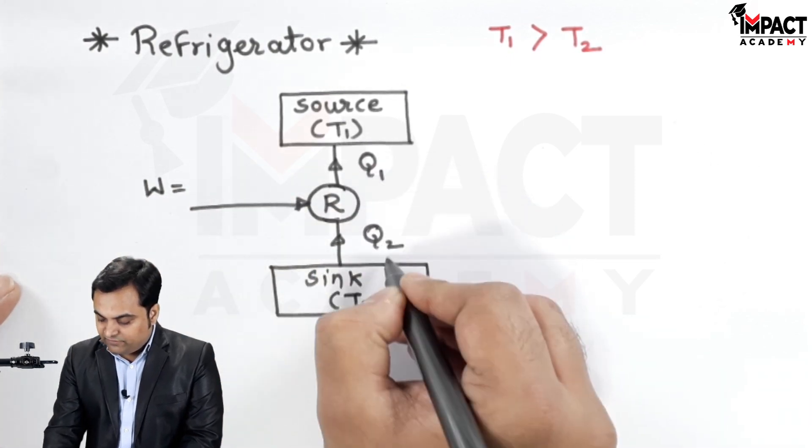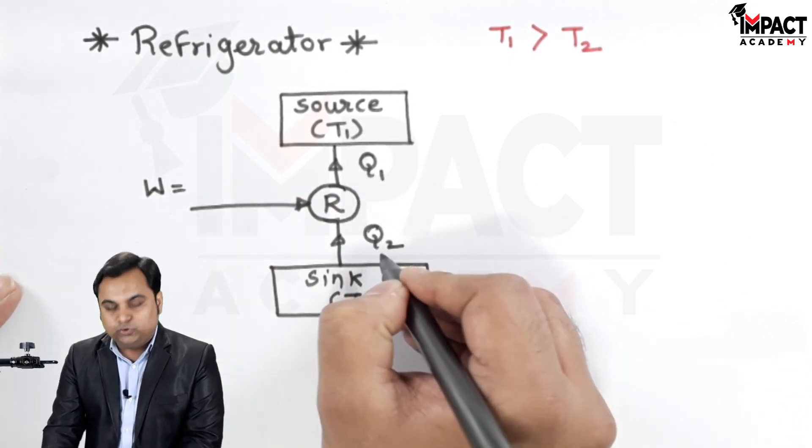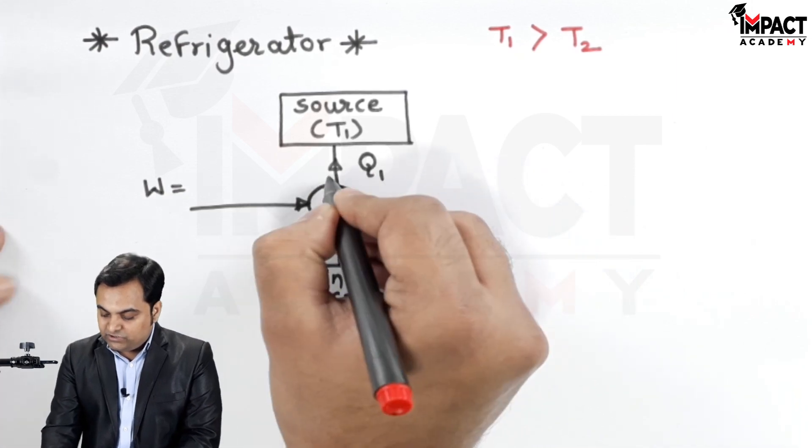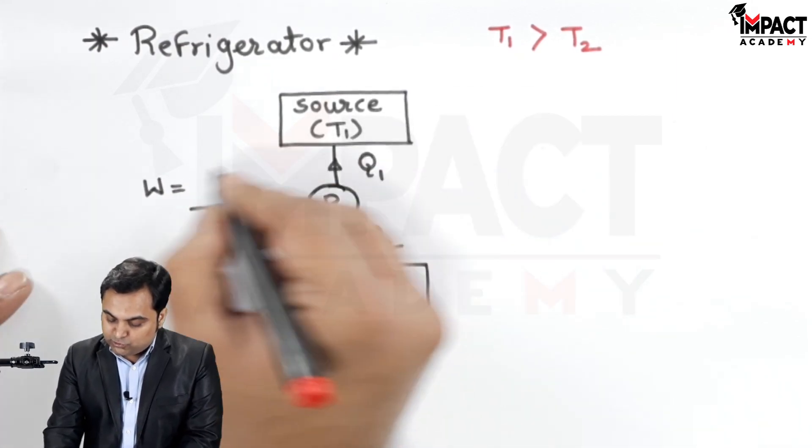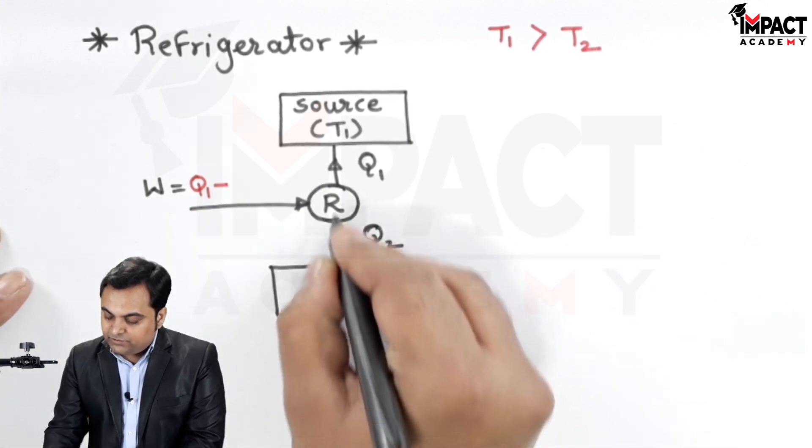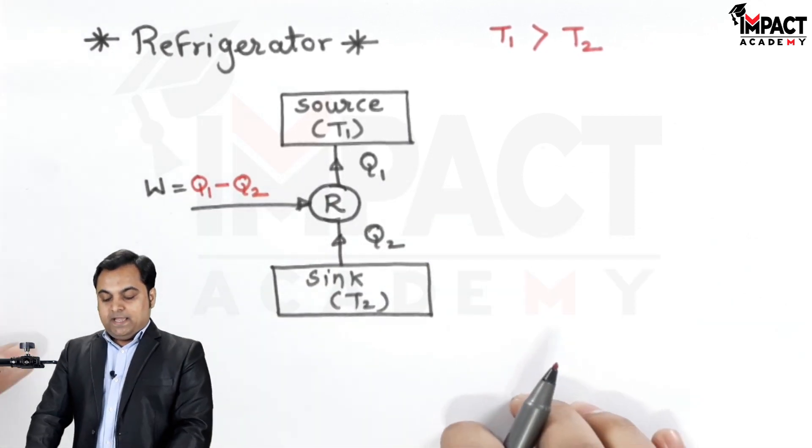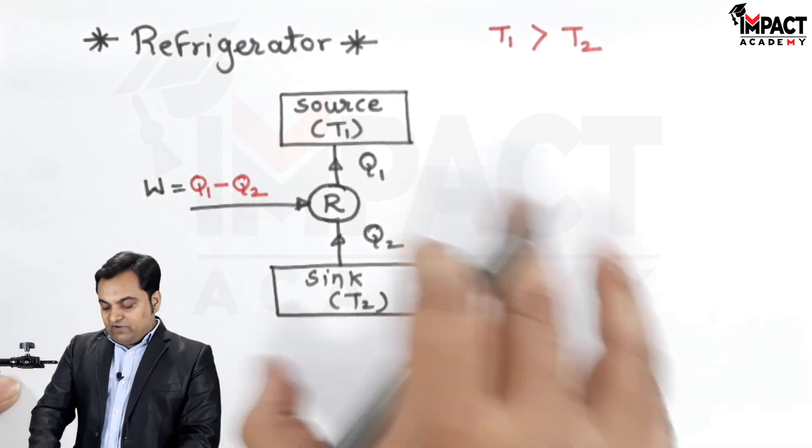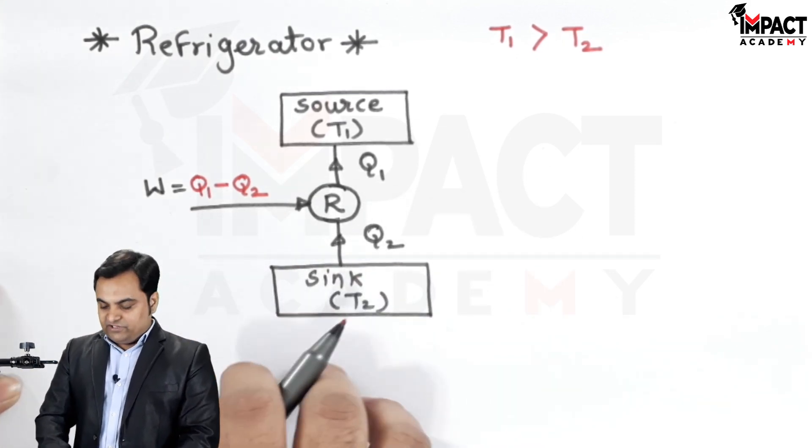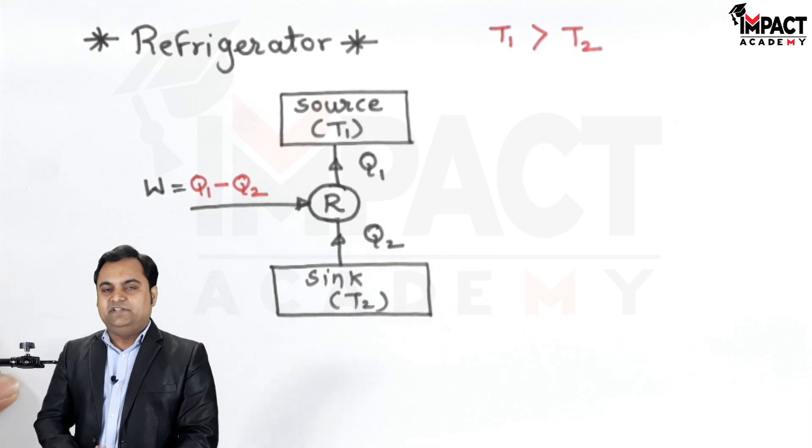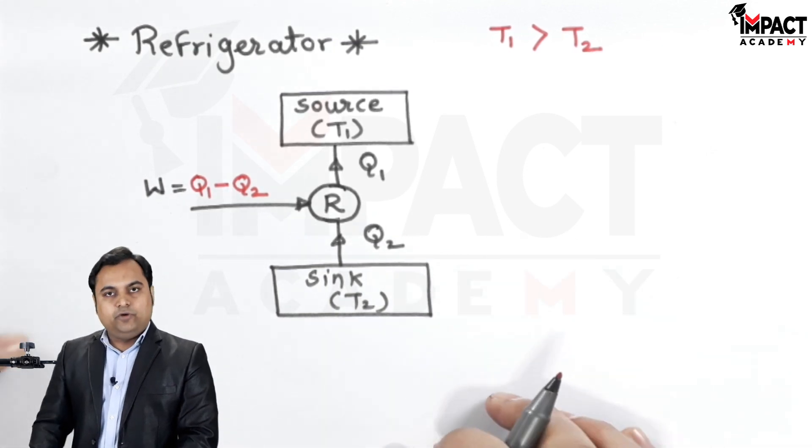This work input is the difference between Q1 and Q2. The heat which is rejected to the source is Q1 minus the heat which is absorbed by the refrigerator is Q2. Once we have understood the functioning of this refrigerator, it can also be said that it is an air conditioner also. I'll write the formula of COP.